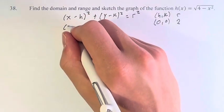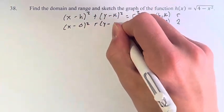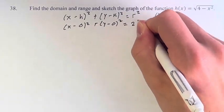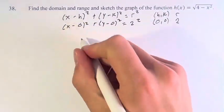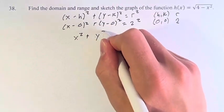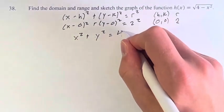This gives us (x - 0)² + (y - 0)² = 2². Or x² + y² = 4.